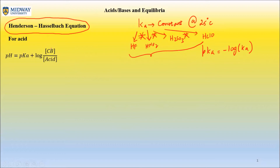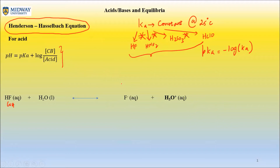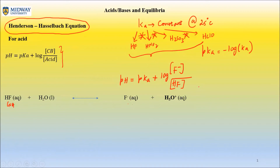You will be provided Ka and can find pKa using pKa = -log(Ka). In the Henderson-Hasselbalch equation, CB stands for conjugate base concentration and A stands for acid concentration. We will use this equation again when we learn buffers. For the HF reaction, you replace the conjugate base with [F-] and the acid with [HF], so the log term becomes log([F-]/[HF]).